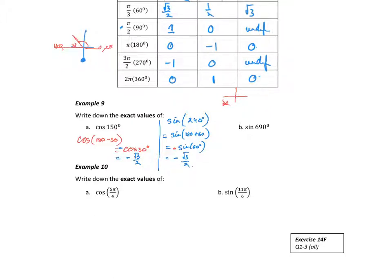For sine 690°, well, 690° is the same as 720° - 30°. 720° minus 30° brings me back down here into the fourth quadrant. That's equal to sine 30°. Is sine positive or negative? Sine is negative here, so it's negative sine 30°, which is -1/2.